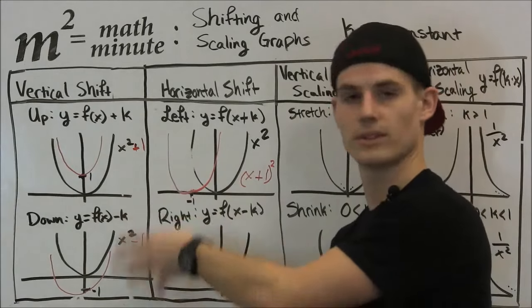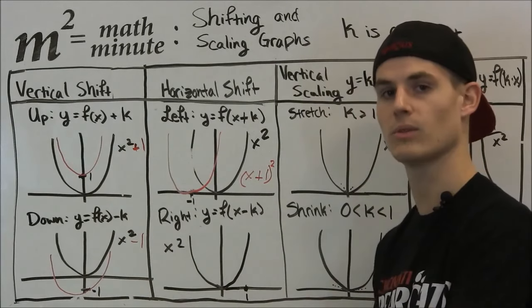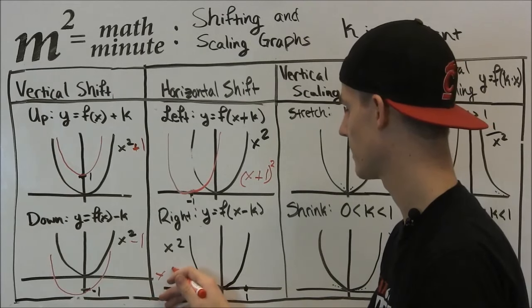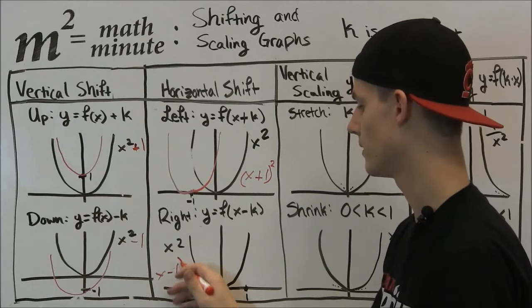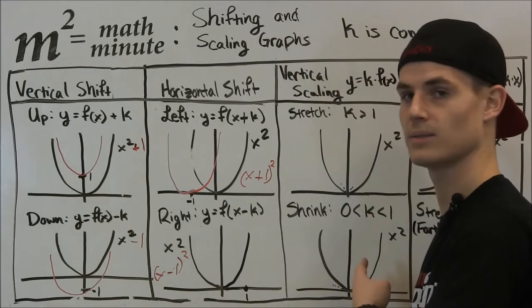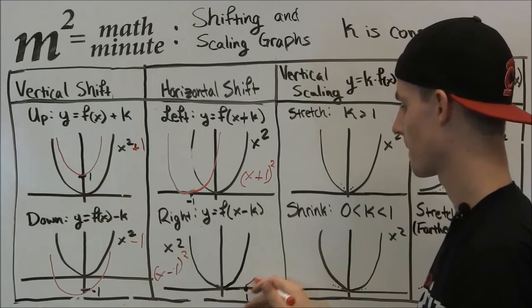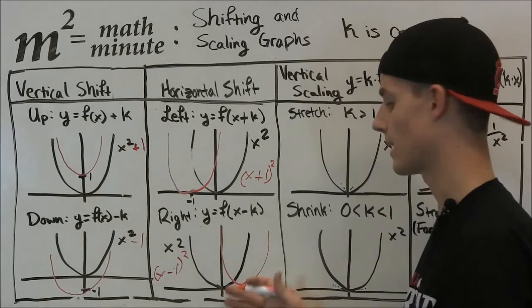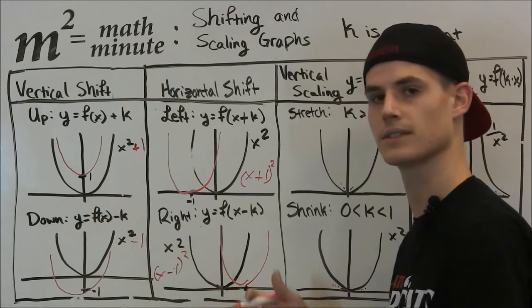Now, kind of similar to vertical shift, we're going to do the opposite when we subtract. So if we're talking about a function (x minus 1) squared, we're going to shift it to the right one unit. Just like that. Same graph as we had before, x squared, just shifted to the right one unit.